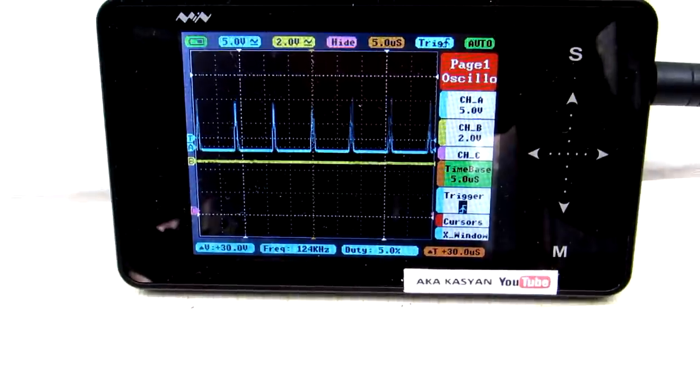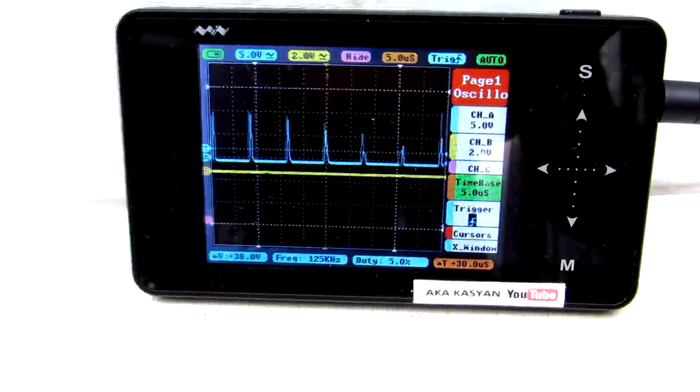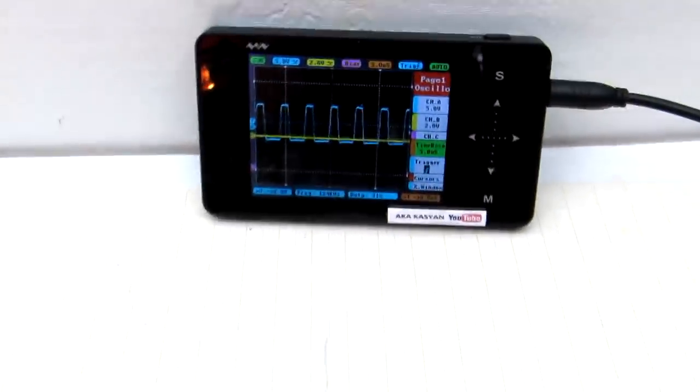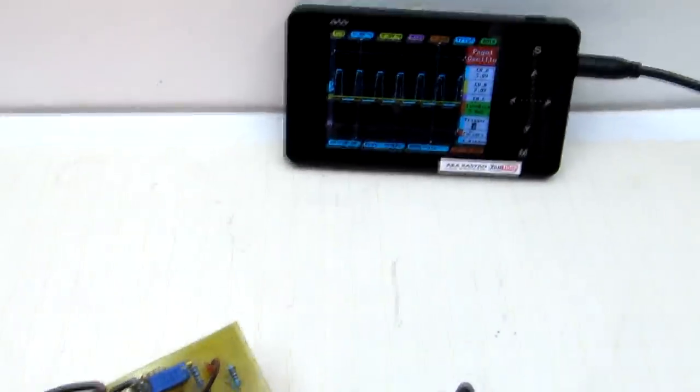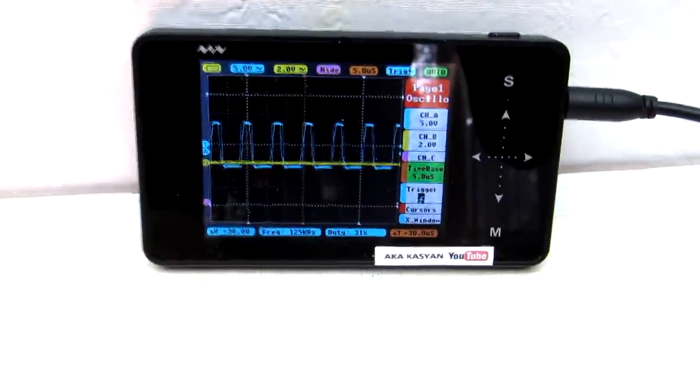Using an oscilloscope we can see how the duty cycle of the pulses changes at the gate of the field effect transistor depending on the output load. The larger the output power the longer the operating cycle of the transistor. That is, more energy enters the choke and consequently the self-induction energy also increases.